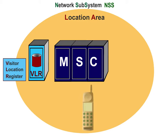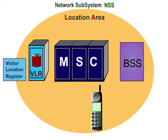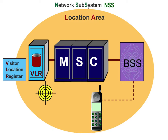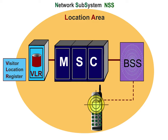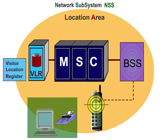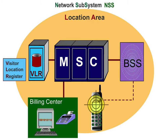The VLR acquires the data of all GSM customers in its areas, and is always well informed of their whereabouts. It assists the MSC in the acquisition of charge-relevant data with subscriber information. The bills are prepared from these data in the Billing Centre. But where does the VLR get the GSM customer data from?